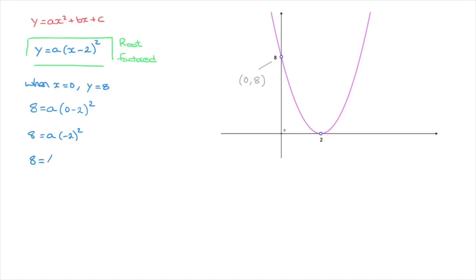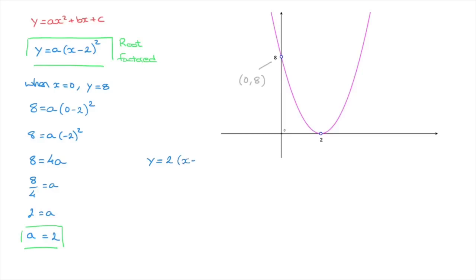That gives us 8 equals a times 4, so 8 equals 4a. Dividing both sides by 4, we get 8 over 4 equals a — in other words, a equals 2. Combining the root factored form with this value of a, we can state that this parabola has equation y equals 2 times (x minus 2) squared. That's the root factored form of this parabola's equation.